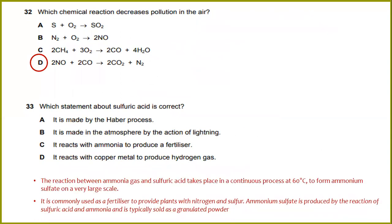Which chemical reaction decreases pollution in the air? The answer would be D. Which statement about sulfuric acid is correct? The reaction between ammonia gas and sulfuric acid takes place in a continuous process at 60 degrees Celsius to form ammonium sulfate on a very large scale. It is commonly used as a fertilizer to provide plants with nitrogen and sulfur. Ammonium sulfate is produced by the reaction of sulfuric acid and ammonia, and it is typically sold as a granulated powder. The answer will be C.